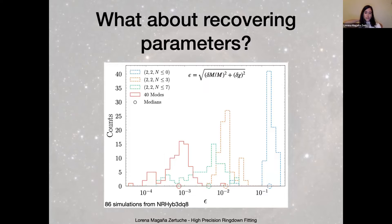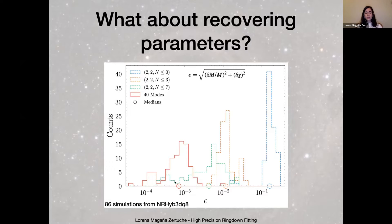Now we want to recover some parameters. If you just take the 2-2-0 mode, the error in your parameter recovery is quite high. We look at masses and spin magnitudes to calculate the error for 86 simulations in a surrogate model and our hybrid 3DQ8. As you add more and more overtones, the median error starts decreasing. But if instead you add 40 modes that include higher harmonics — not just the 2-2 mode — you can bring this down to a much lower order of magnitude, and it's hard to push even lower.